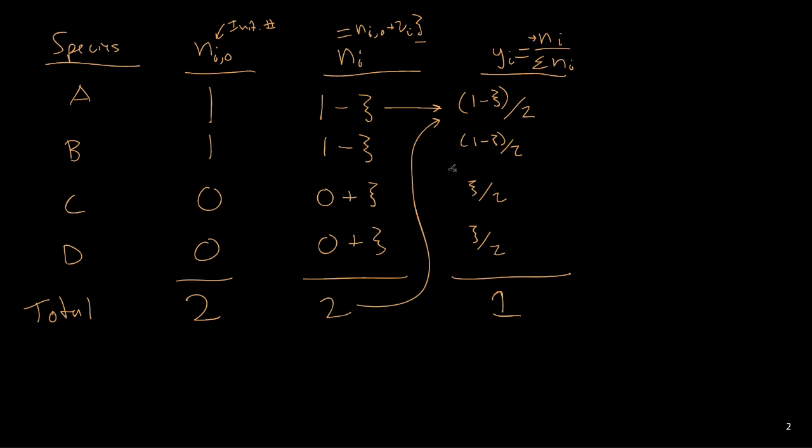So taking this information, we can then plug it back into our equilibrium expression. Ka is equal to yc times yd over ya times yb.